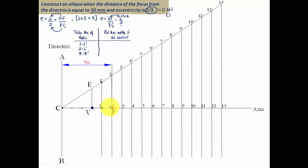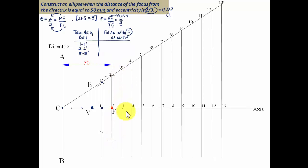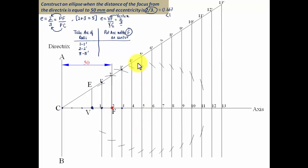Keep one leg of the compass at 1-dash and the other at 1, then with focus F as center, cut an arc above and below on the 1-1-dash line. Then with radius 2 to 2-dash and F as center, cut arcs above and below. Continue with 3 to 3-dash, 4 to 4-dash, and keep repeating this process for all subsequent points.